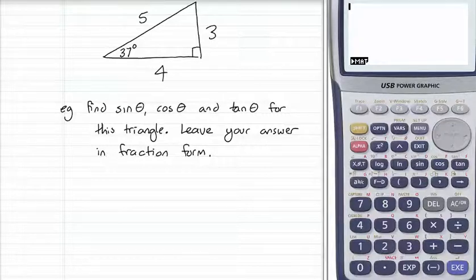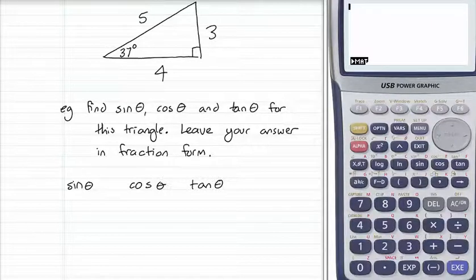To do this we need to know our sine, cos, and tan ratios. Sine theta equals opposite over hypotenuse, cos theta equals adjacent over hypotenuse, and tan theta equals opposite over adjacent.